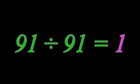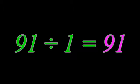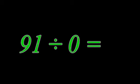91 divided by 91 equals 1. 91 divided by 1 equals 91. 91 divided by 0 equals 0.